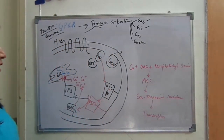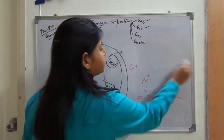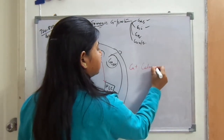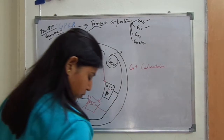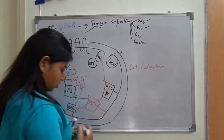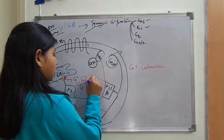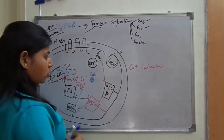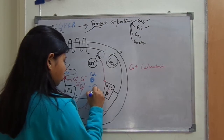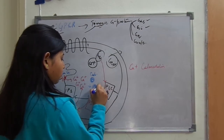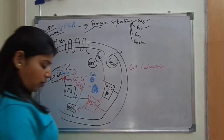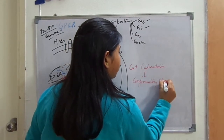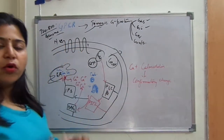This is one function of the calcium molecule. The second function is that calcium binds to a protein known as calmodulin inside the cytoplasm. Calcium binds to calmodulin and brings about a conformational change in the calmodulin molecule. After the conformational change, it can perform a range of functions.